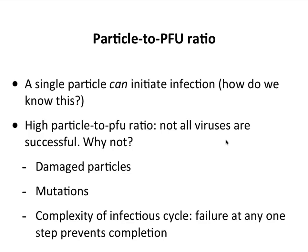Why is the particle-to-PFU ratio so variable? We have some ideas. First, some particles are damaged when made by the cell or in the laboratory under various conditions, rendering them non-infectious. Second, many genomes may carry mutations that make them non-infectious—a byproduct of replication. Third, and perhaps most importantly, the complexity of the infectious cycle is a major factor: a virus must complete all steps in the right order and at the right time, and failure at any single step means the cycle isn't completed and an aberrant particle results. These likely explain why the particle-to-PFU ratio is high for many animal viruses.